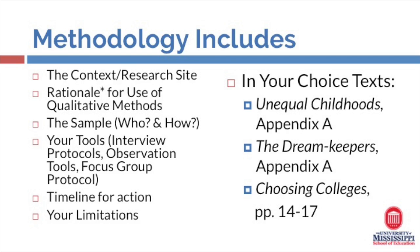In our choice texts, there are really well-written and well-crafted methodology sections. In Unequal Childhoods, the methodology section is included in Appendix A. In The Dream Keepers, it's also included in Appendix A. And in Choosing Colleges on pages 14 through 17, you'll find solid, well-written methodology sections which provide a context about the research site, a rationale for why qualitative methods are best suited to answer the research question, information about the sample, the tools utilized, the timeline for action, and the specific limitations that the author encountered.